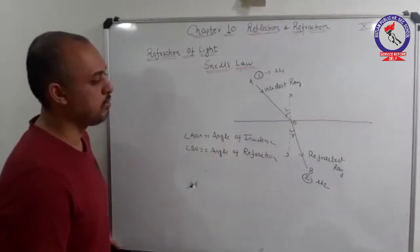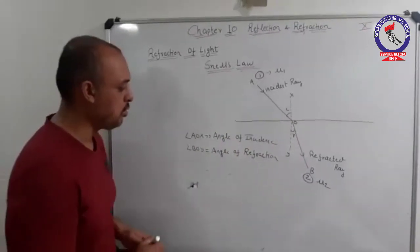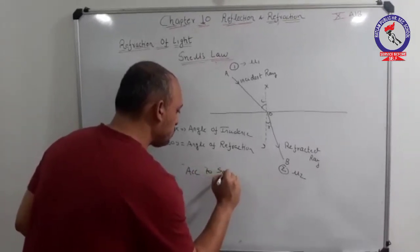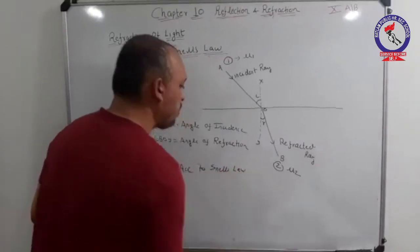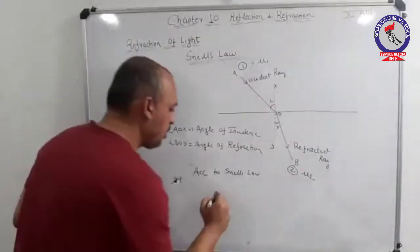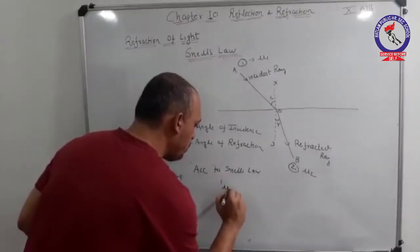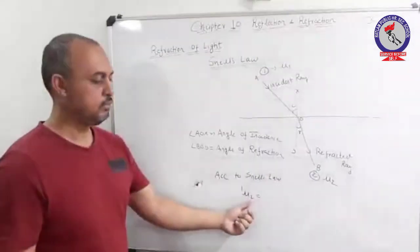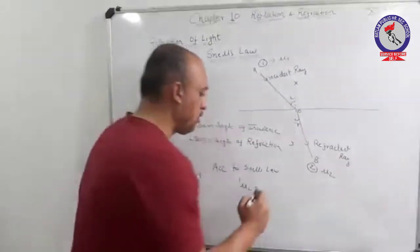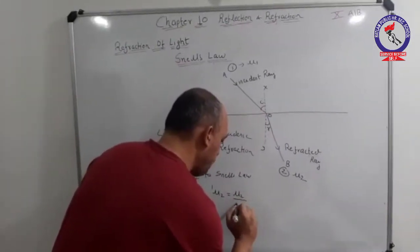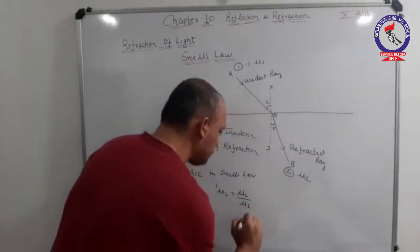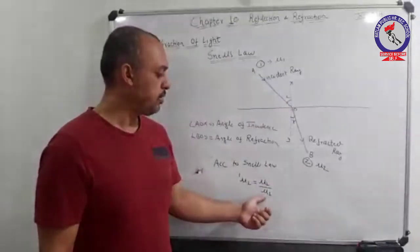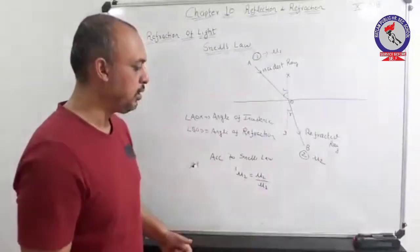Now, what does Snell's law say? According to Snell's law, we may write 1μ2, which is the refractive index of medium two with respect to medium one. This can also be written as mu two divided by mu one, where mu two represents the refractive index of medium two and mu one represents the refractive index of medium one.